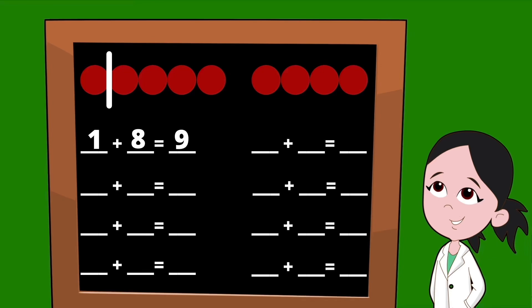Let's slide our line over one dot to the right. Now on the left of our line, we have two dots, so our first partner is the number two. To the right of our line, we have seven dots, so our second partner is the number seven. Two plus seven equals nine.